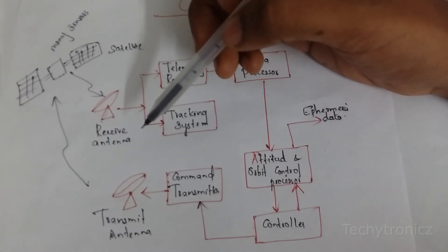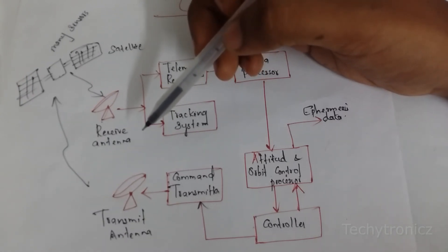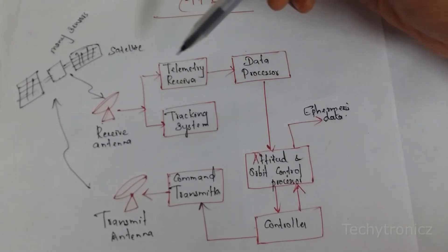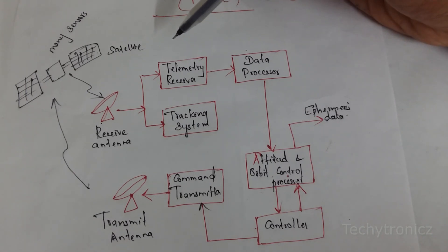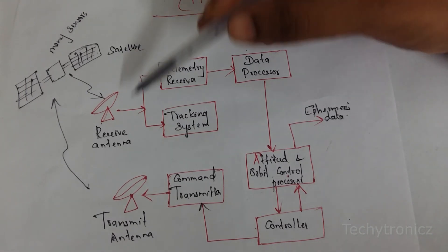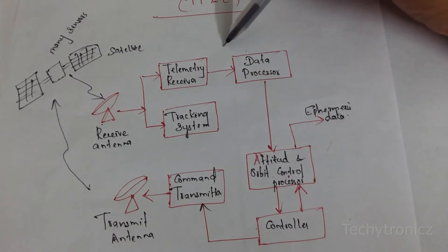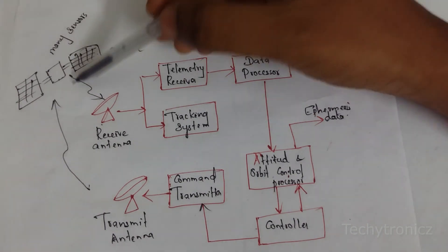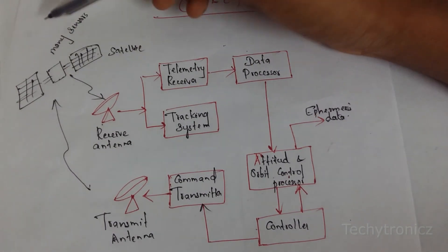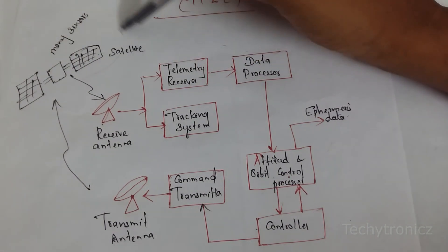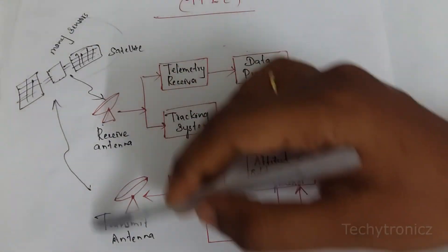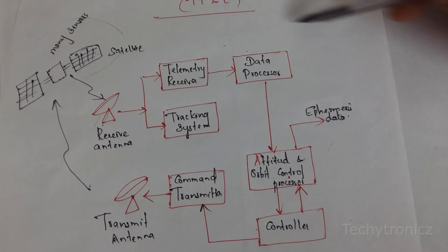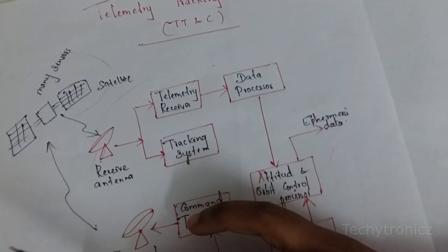Every control of the satellite will be in the earth station area. So there are two sections: this is the satellite section and these are the earth station section.